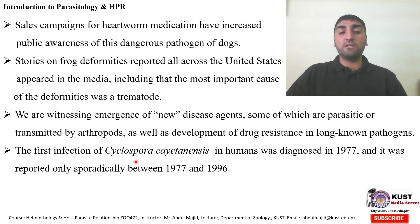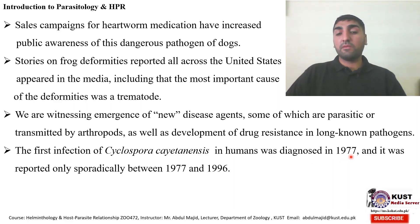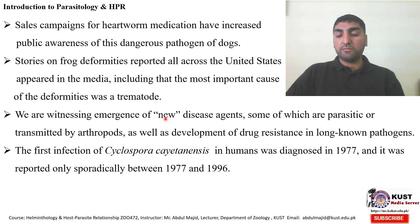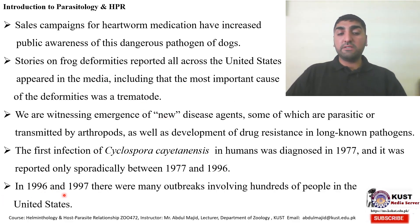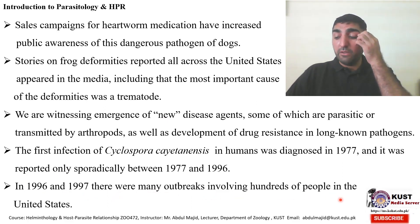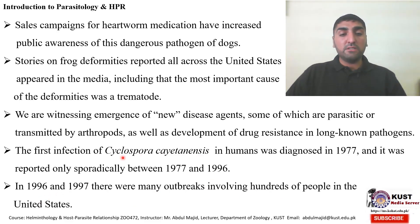The first infection of Cyclospora cayetanensis in humans was diagnosed in 1977, and it was reported only sporadically between 1977 and 1996. In 1996 and 1997 there were many outbreaks involving hundreds of people in the United States. This may be pronounced as Cyclospora cayetanensis.